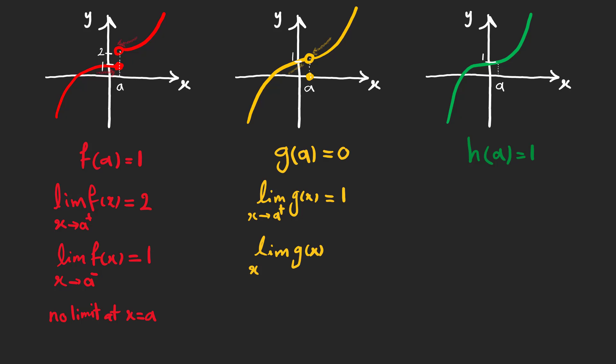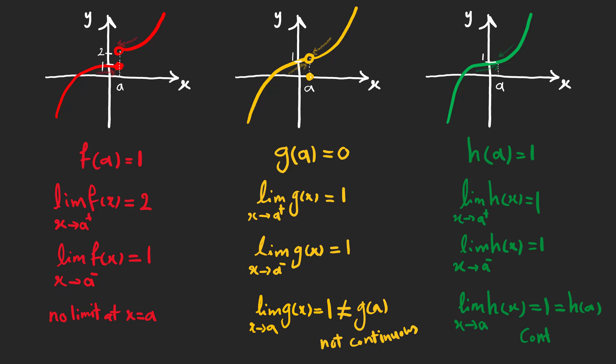For g of x on the other hand, both are equal and we can define the limit at x equals a to be one. But the limit is not equal to g of a, so the function is not continuous. The green function limits are also equal and equal to the function at point a. And the function is continuous because for every point in h of x, this expression applies.